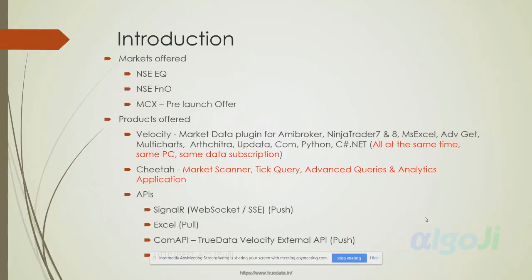A brief introduction about what we'll cover today and about True Data. True Data offers NSE equity and F&O markets and has been doing so for three years. This is what you'll get in the APIs we'll discuss. We're also adding MCX in the second half of July, with a pre-launch offer giving a 45% discount. Once added, equity, F&O, and MCX will all be available through these APIs.